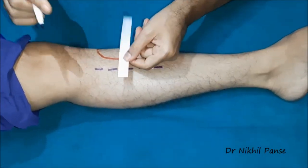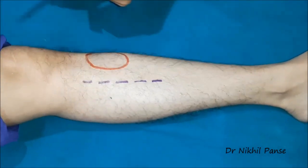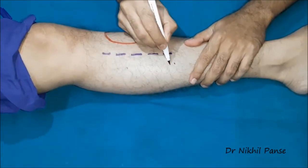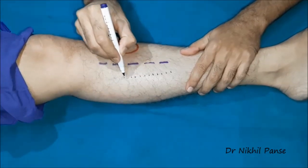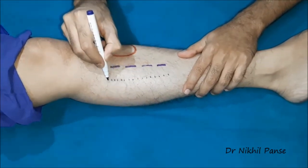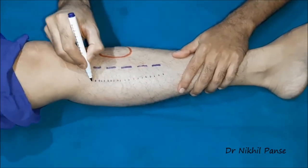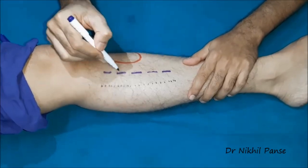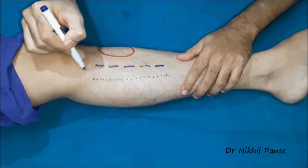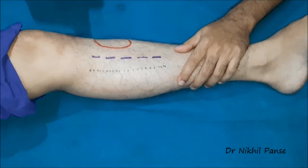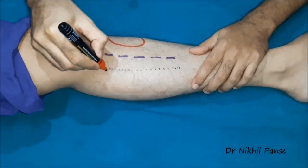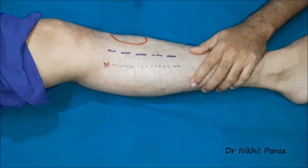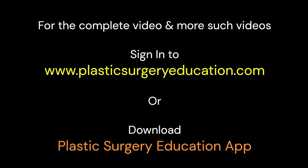The second step is to mark the axis of the posterior tibial artery, which is generally 2.5 centimeters medial to the medial border of the tibia. Once the axis is marked, somewhere near the base we want to identify a good perforator. So let us assume that we have dopplered it and we have found a good perforator.